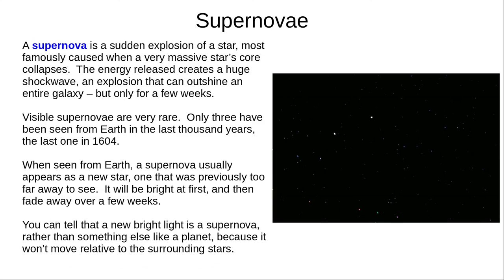The last natural object on the list is a supernova. There are a few types, but the main one is created when a very massive star reaches the end of its life. The star's core collapses, releasing a tremendous amount of energy in a shockwave, which spreads out the star's outer layers. The expelled gas can outshine an entire galaxy until it cools over a few weeks or months. Supernovae are rarely visible to the naked eye, and the last visible one was seen in 1604. A supernova appears as a bright new star, where that star was previously too faint to see. It will be bright at first, possibly even visible during the day, and will fade out over several weeks.